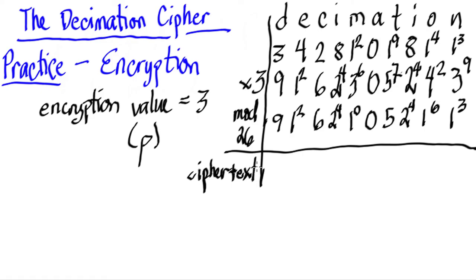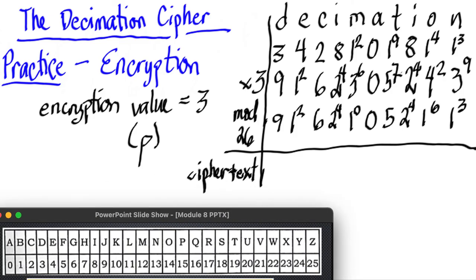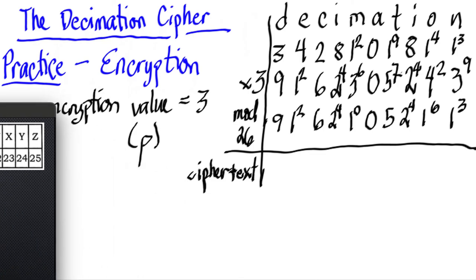So this is the ciphertext. What we need to do is go back to this table over here, and then we will convert all the numbers there into letters, going back to letters, so that we can know the encrypted value. So 9 is J, 12 is M, 6 is G, 24 is Y, and so on, so we're going to follow that.